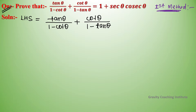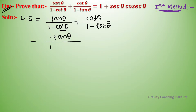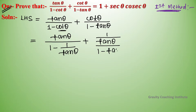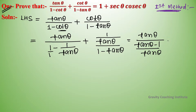These questions can be solved by different methods. Here we can solve by converting terms using sine and cosine, or we can solve by expressing cot theta as 1 upon tan theta. So equal to tan theta upon (1 minus 1 upon tan theta) plus (1 upon tan theta) upon (1 minus tan theta).